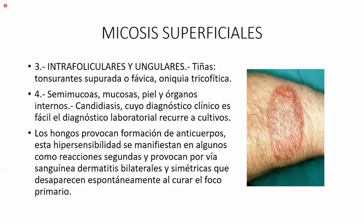Otro tipo serían las epidérmicas, exclusivas de la piel: son la pitiriasis versicolor, la dermatofitosis de la piel lampiña y las dermatofitosis de los pies. Otro tipo de micosis superficiales serían las intrafoliculares y ungulares, que ya entran al orificio o poro de la piel. Aquí estarían las tiñas, generalmente en el cuero cabelludo, y la oniquia tricofítica, que ataca las uñas.